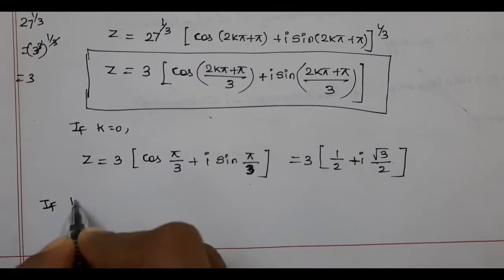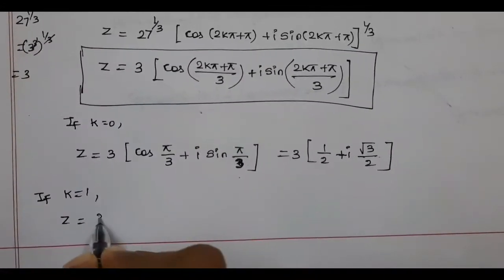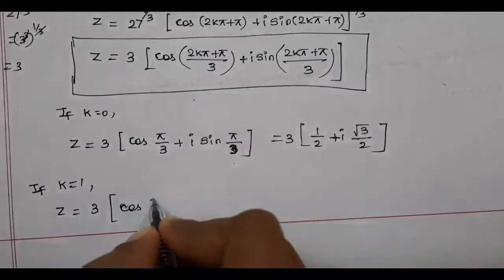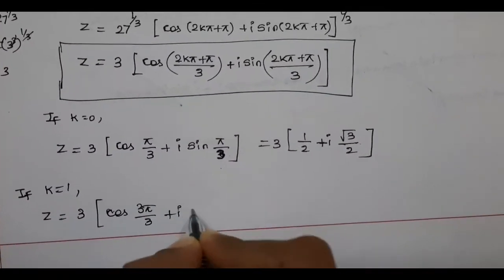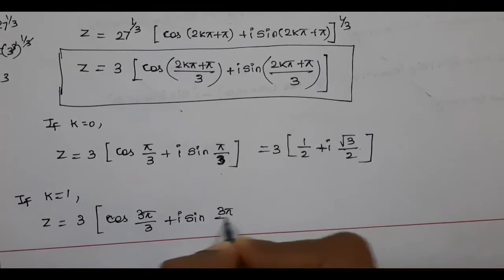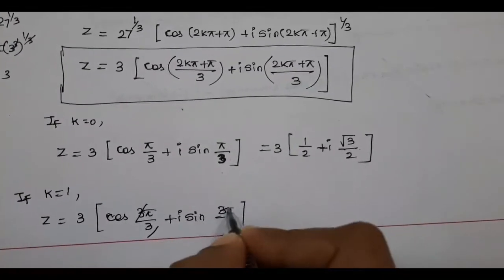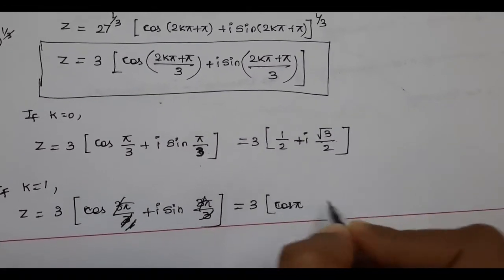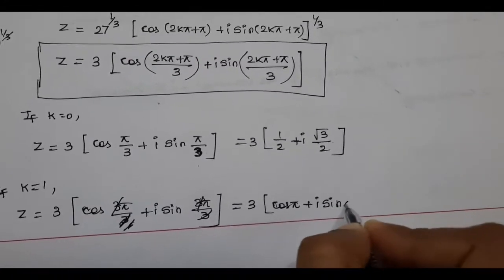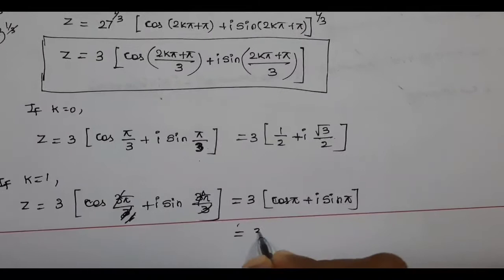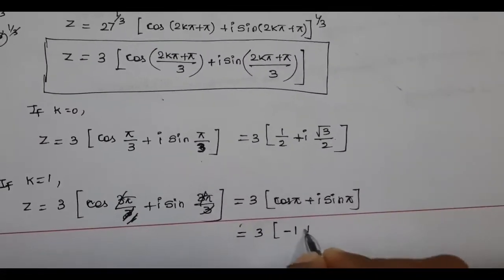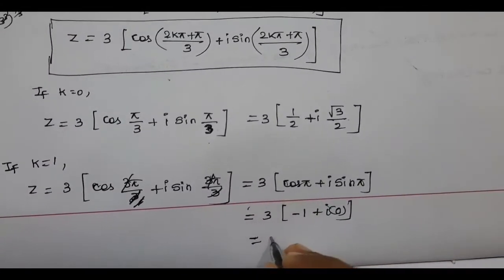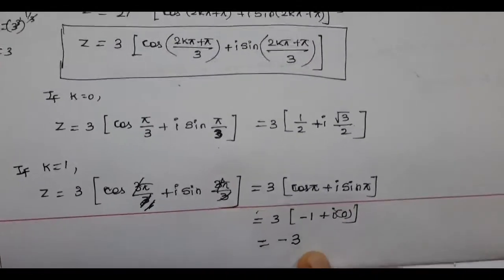If k = 1, substituting: 2π + π = 3π, so 3π/3 = π. Thus z = 3 × (cos π + i sin π). We know cos π = −1 and sin π = 0. So z = 3 × (−1) = −3. This is the second root.